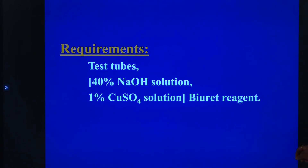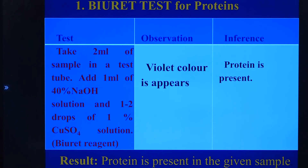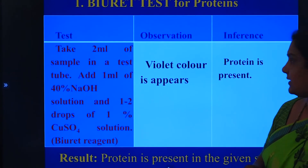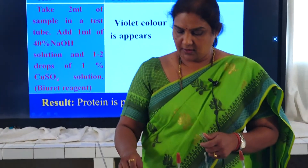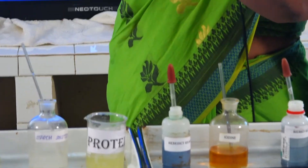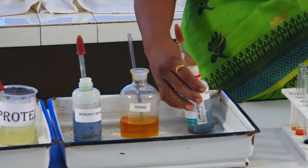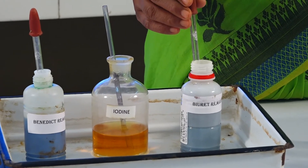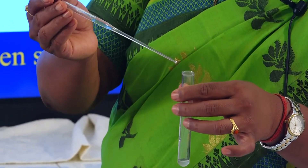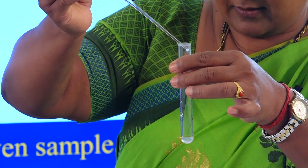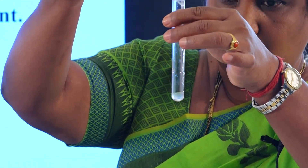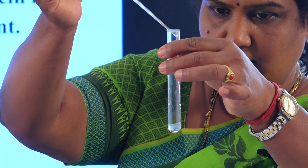Now what are the requirements for the biuret test? It's the test tubes and the biuret reagent — or alternatively a 40 percent sodium hydroxide solution and 1 percent copper sulfate solution. To conduct this, we take a test tube and add 2 to 3 ml of the sample into the test tube. Later on we add directly the biuret reagent — just 2 to 3 drops of it.